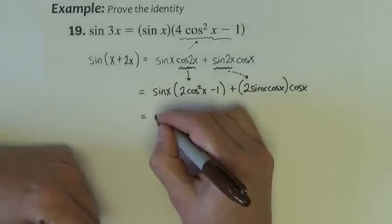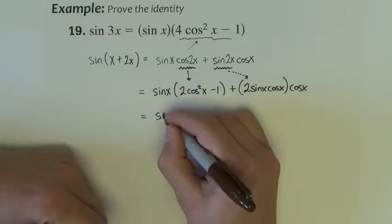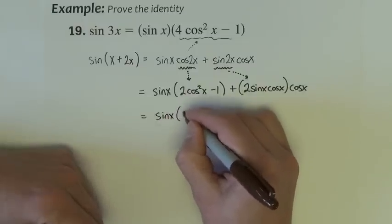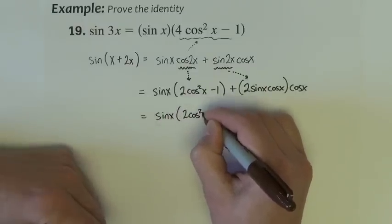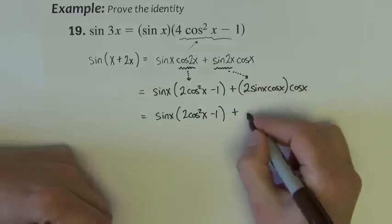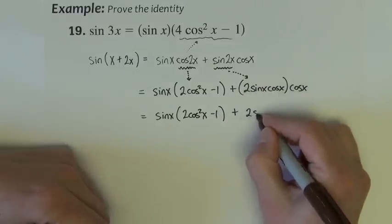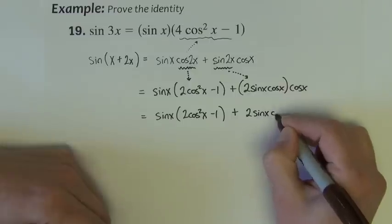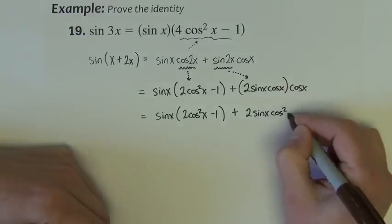So now we've got, I'm just going to leave this as it is, sine x, 2 cosine squared x minus 1, plus I can multiply these together and it's 2 sine x cosine squared x.